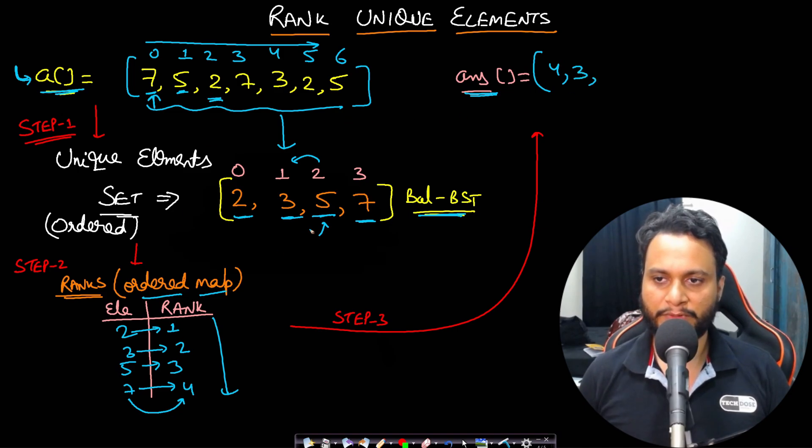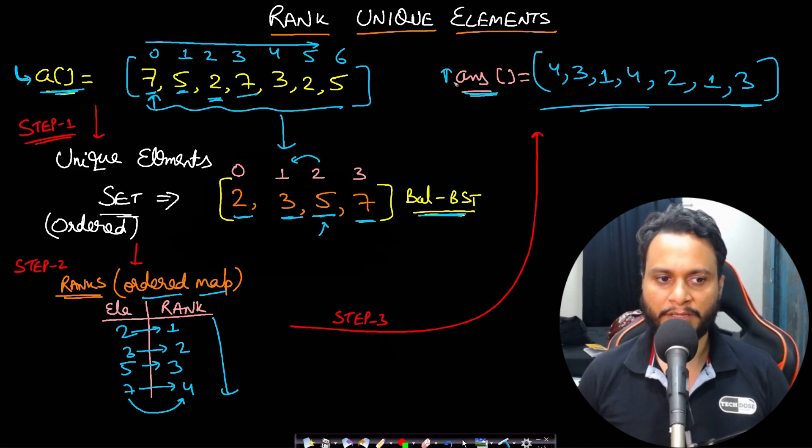Similarly, write for seven, which will be four. Again write for three, which will be two. Write for this two, which will be one. Write for this five, which will be three. So this is the answer array and this is something we need to return. So I think these steps are very easy to understand.